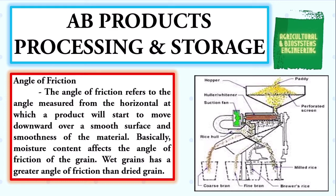Basically, moisture content affects the angle of friction of the grain. Wet grains have a greater angle of friction than dried grain.